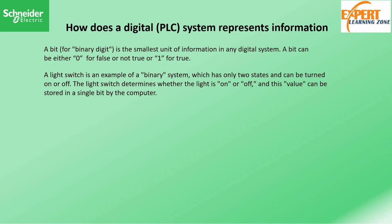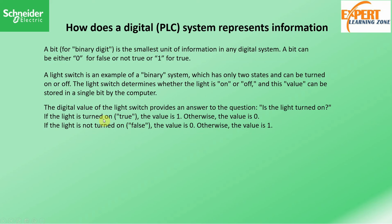Let's look at a light switch scenario as an example of a binary bit system, which has only two states and can be turned on or off. The light switch determines whether the light is on or off, and this value can be stored in a single bit. If the light is turned on — which is true — its value is one; if the light is turned off — which is false — its value is zero.